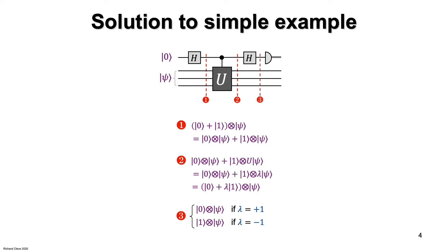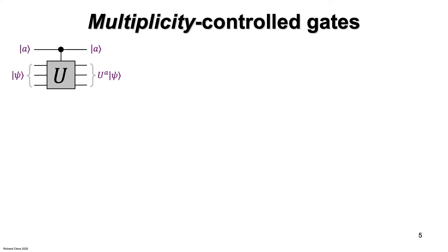I will show you how the general case is defined, and then we'll see that it turns out not to be that much harder than this case to solve. In order to define the phase estimation problem in full generality, we first need to extend our notion of a controlled-U gate. Here's a review of what a standard controlled-U gate is: the unitary matrix is a block matrix with two blocks on the diagonal — identity and U. When the control qubit is in computational basis state ket-a, we can write the output state of the target qubit succinctly as U to the power a acting on psi.